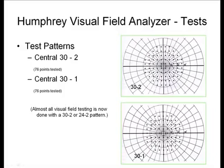Historically, it's important to know the difference between test patterns. At one point there was a 24-1 and a 30-1, but they're no longer used. The difference between the 30-1 and the 30-2 is the spacing of tested locations: in a 30-1 test, the locations fall along the horizontal and vertical meridians with points offset by 6 degrees. In a 30-2 test, the tested locations are offset from the vertical and horizontal meridians by 3 degrees, but neighboring tested points are still 6 degrees apart. Combining a 30-1 and 30-2 would theoretically test every 3 degrees, but no one does this clinically — everyone uses a dash-2 pattern, either 24-2 or 30-2.